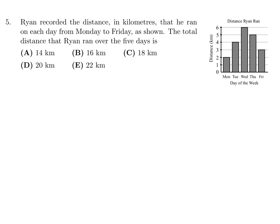Ryan recorded the distance in kilometers that he ran on each day from Monday to Friday, as shown. The total distance that Ryan ran over the 5 days is. So let's add this up. This looks like 2, this looks like 4, 6, 5, and 3. So if I add those up, it looks like that is 20. So 20 kilometers is the total for number 5, and therefore that would be D.